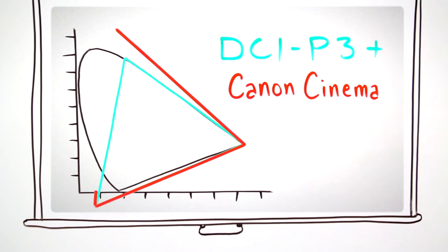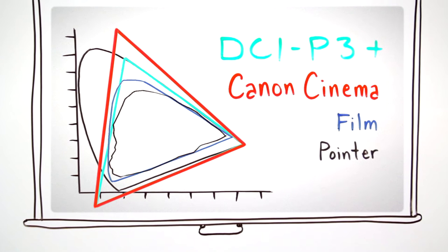Canon Cinema Gamut takes color range even further, finally encompassing film in the entire pointer color gamut.